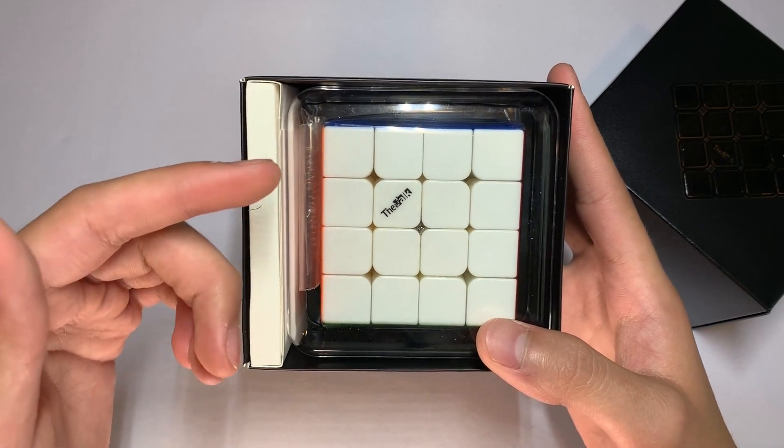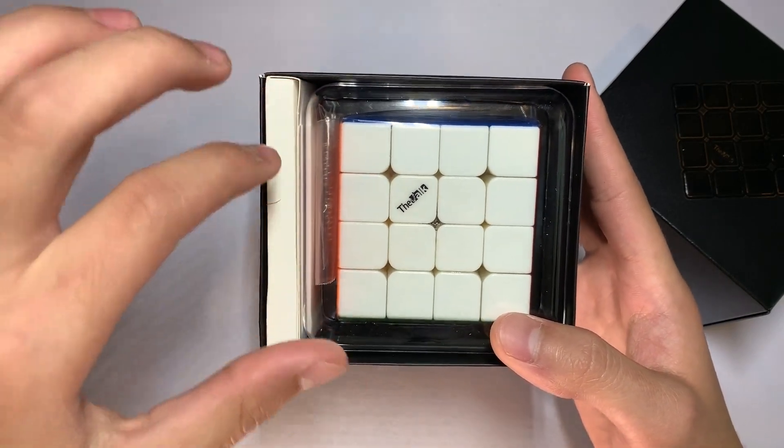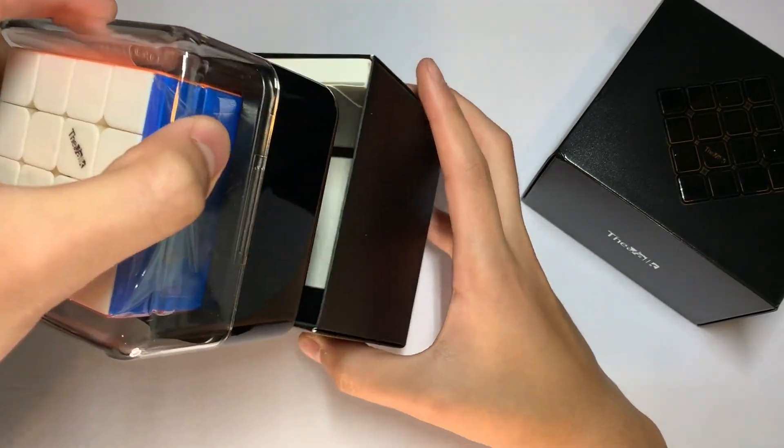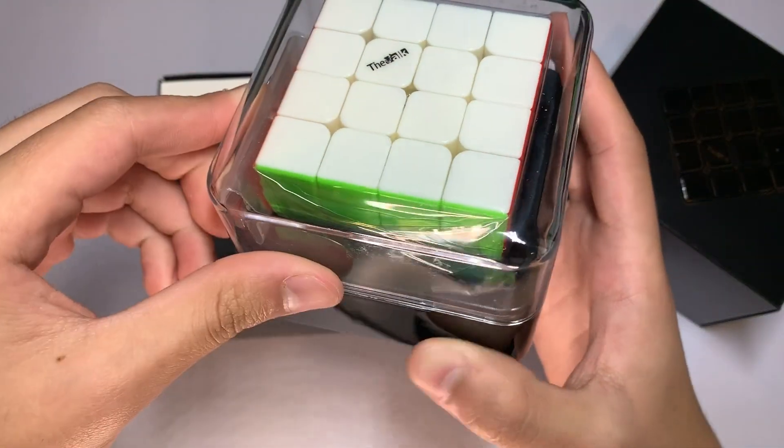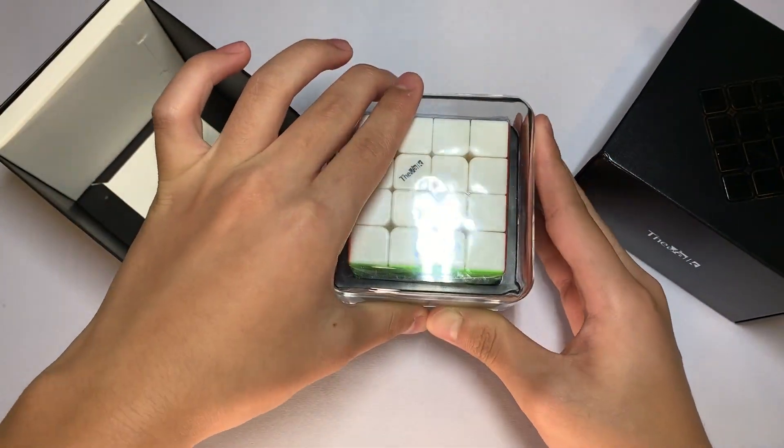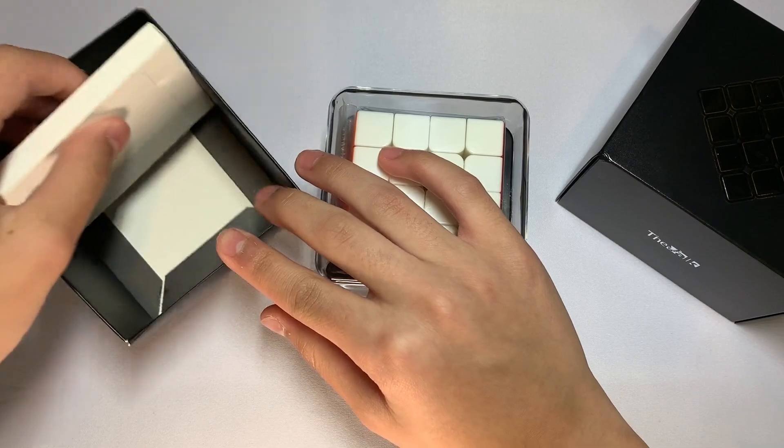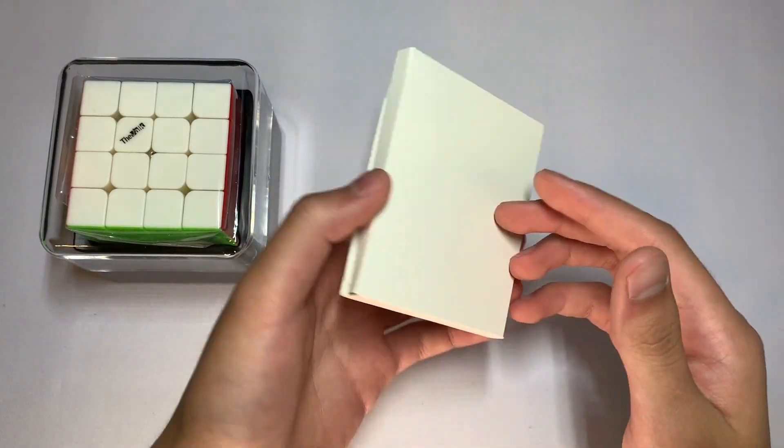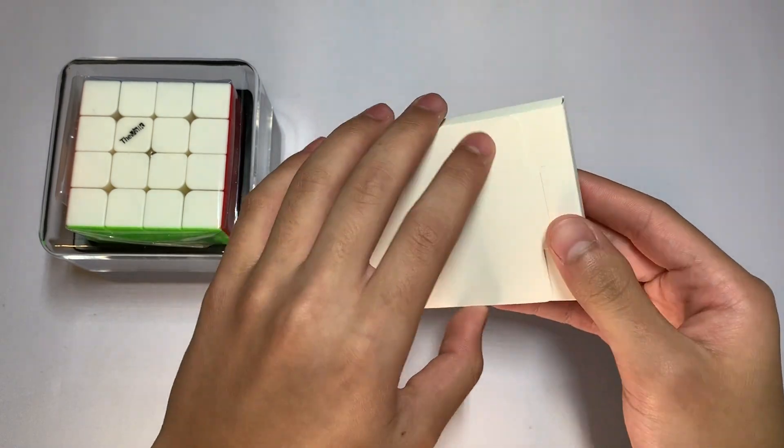It looks like we have obviously the cube and then some sort of accessories box. The 4x4 comes in a similar box to the 2x2. Let's just take a look at this little pouch thing first.